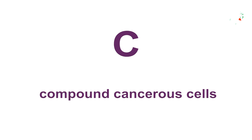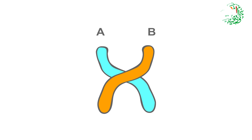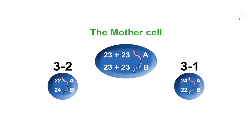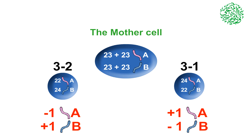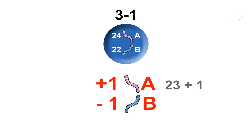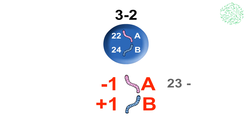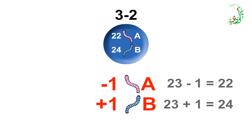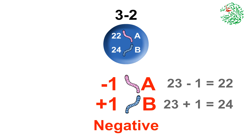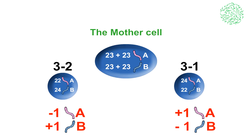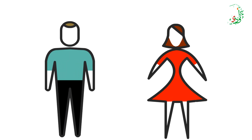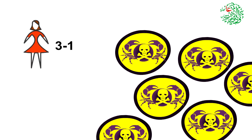Category C: compound cancerous cells. Displacement is created in both chromosome groups A and B, but the number of chromosomes of each cell is equal. Each divided cell has homonymous categories of chromosomes A and B with equal charge and number. Cancerous cell number 1 has one extra chromosome A and lacks one chromosome B, totaling 46 chromosomes, with overall positive cellular charge. In this category, cancerous cells number 1 and number 2 are malignant in both males and females and produce malignant tumors. Cancerous cell number 1 in females and number 2 in males are more aggressive.